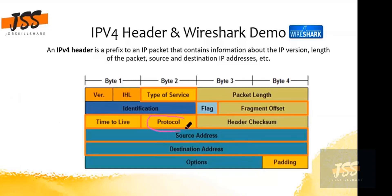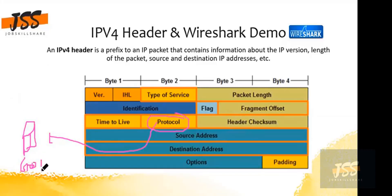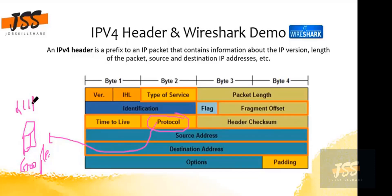Then we have the protocol field. Of course, when we are heading to some server — let's suppose we're going to the Google web server from our host machine — we are going to use some protocol. It could be HTTP or HTTPS, or it could be UDP, or many other protocols. So this field tells us which protocol we're going to use when we hit the destination.